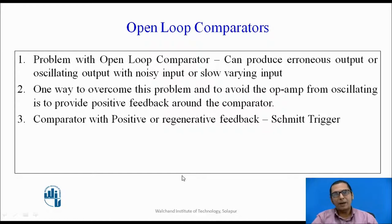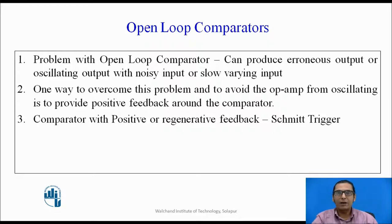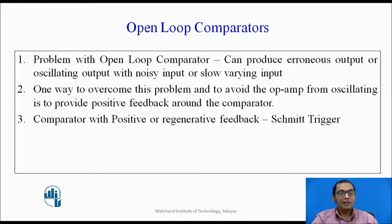This covers the open-loop comparator, including the general comparator and the special zero-crossing detector. However, there are problems with the open-loop comparator: they can produce erroneous oscillation output with a noisy or slowly varying input. One way to overcome this is to provide positive feedback around the comparator. A comparator with positive feedback is a special type called the Schmitt trigger, which we will discuss in another lecture.